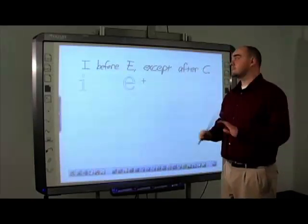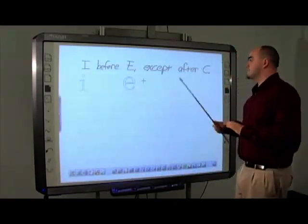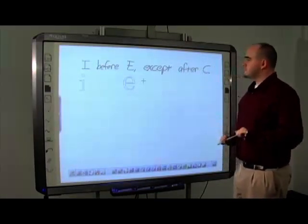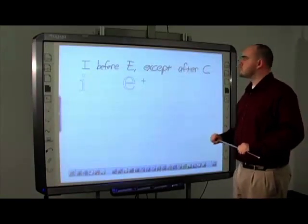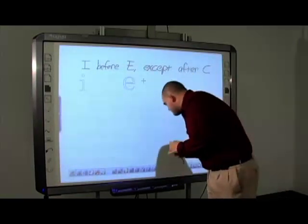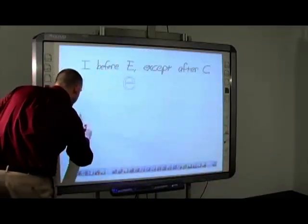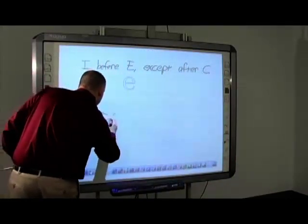I before E, except after C, or when sounded like A, as in neighbor and weigh. Let's write that on the board. Write the word neighbor on the board, but incorrectly: N-E-I-G-H-B-O-R. Good.